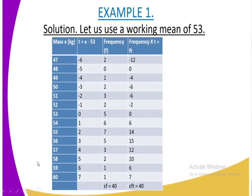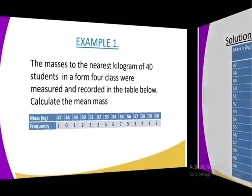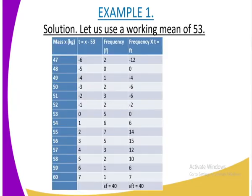Now, I have come and we have decided to tabulate our information on our table as you can see. Here, we are saying let us use a working mean of 53. So that is to mean we are going to arrange our masses as you can see from 47 to 60. And we have got t, whereby in this case, our t we are going to get is our x, and x in our case is the mass in kgs. We subtract the assumed mean and our assumed mean is 53.